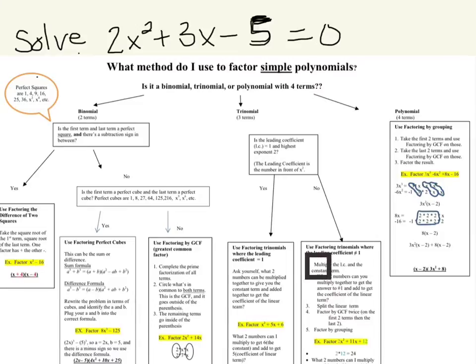The first step says multiply the leading coefficient and the constant term together. Our leading coefficient is the number in front of x², so that's 2, and you multiply the constant together. So 2 times negative 5 gives us negative 10.